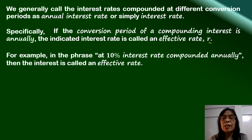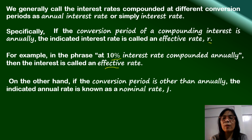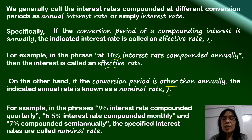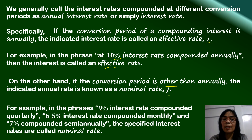For example, in the phrase 'a 10% interest rate compounded annually,' the 10% interest rate is considered an effective rate. On the other hand, if the conversion period is other than annually, the indicated annual rate is known as a nominal rate, denoted by the letter J. For example, a 9% interest rate compounded quarterly, 6.5% compounded monthly, and 7% compounded semi-annually — these rates 9%, 6.5%, and 7% are considered nominal rates.